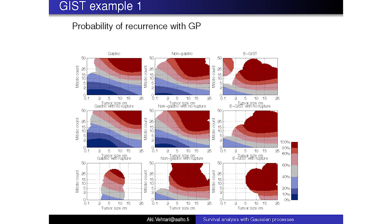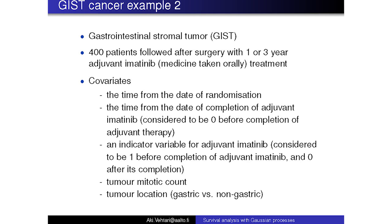In the previous example it was already kind of personal information — what's your probability — but it didn't yet affect the treatment. In this other example, there's also treatment involved. Now we have not just information from the time of surgery, but also whether they are currently taking the medication or how long ago they stopped. And then there are again the same covariates: tumor mitotic count and tumor location as previously.